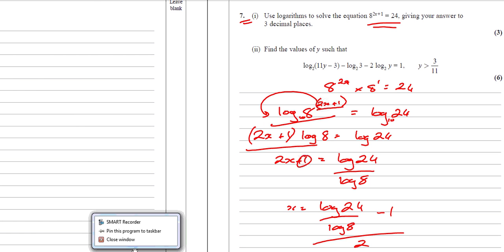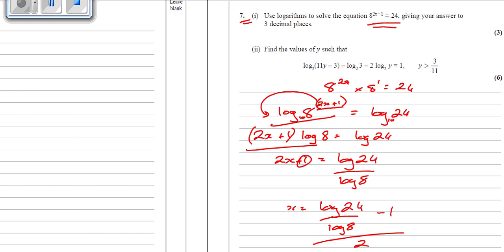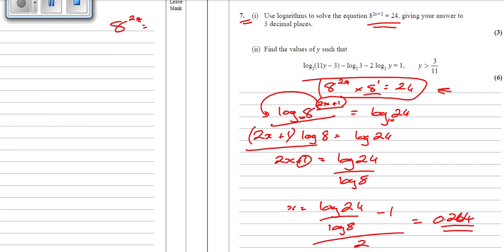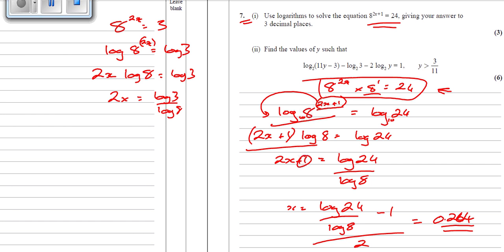Doing so gives us 0.264. Just to show the other method gives the same answer: if we divide both sides by 8 first, we get 8^(2x) = 3. Taking logs of both sides: 2x log 8 = log 3. Dividing: 2x = log 3 / log 8, then divide by 2: x = (log 3 / log 8) / 2. And you also get 0.264. There are a couple of ways to do that, but these are the most straightforward.